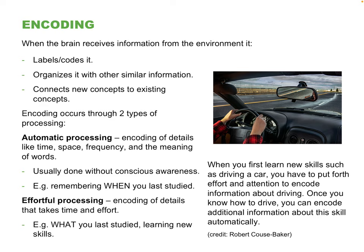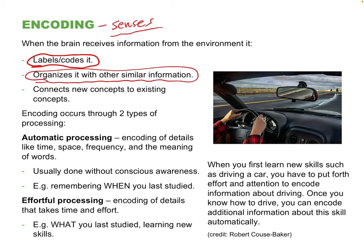Let's focus on encoding and what happens when we learn something new. To encode anything, we have to use our senses — we see, hear, smell, taste, and touch. All those are different types of memories we can encode. We often need to label new information, organize it, and group it with something else so we can relate to it better. Sometimes encoding feels automatic and quick — that's called automatic processing, where you encode something without much conscious awareness.